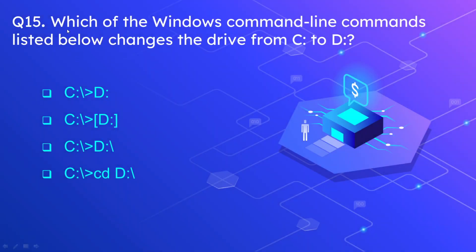Question number fifteen: which of the Windows command line commands listed below changes the drive from C to D? The correct answer from these options is D: (D colon). This option is used to navigate from drive C to drive D.